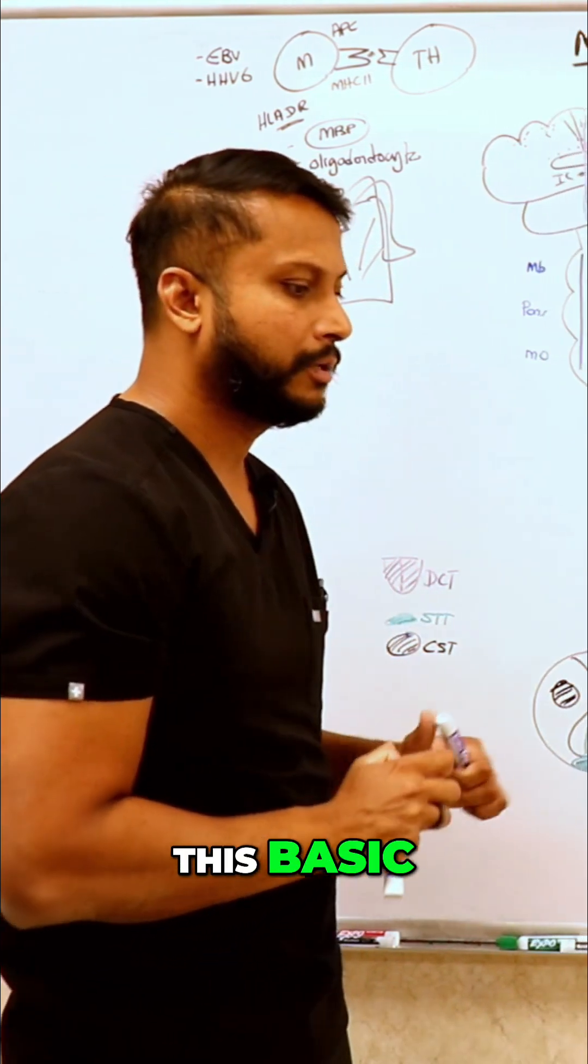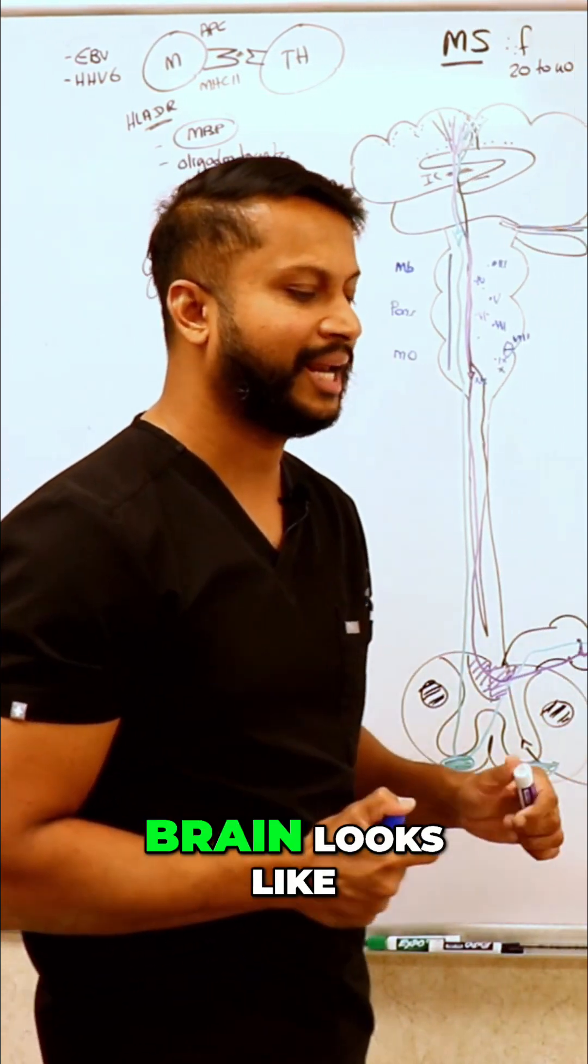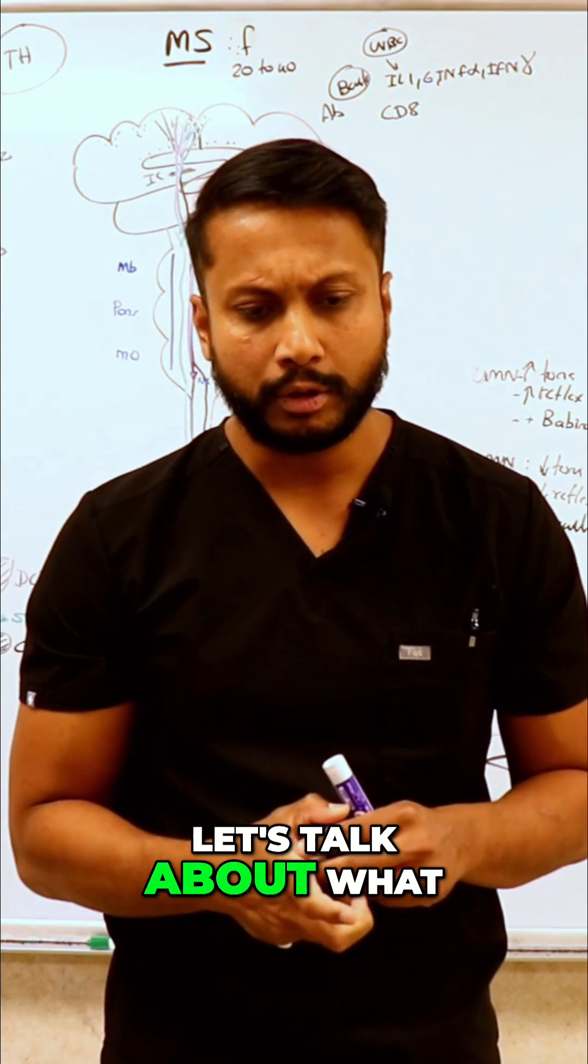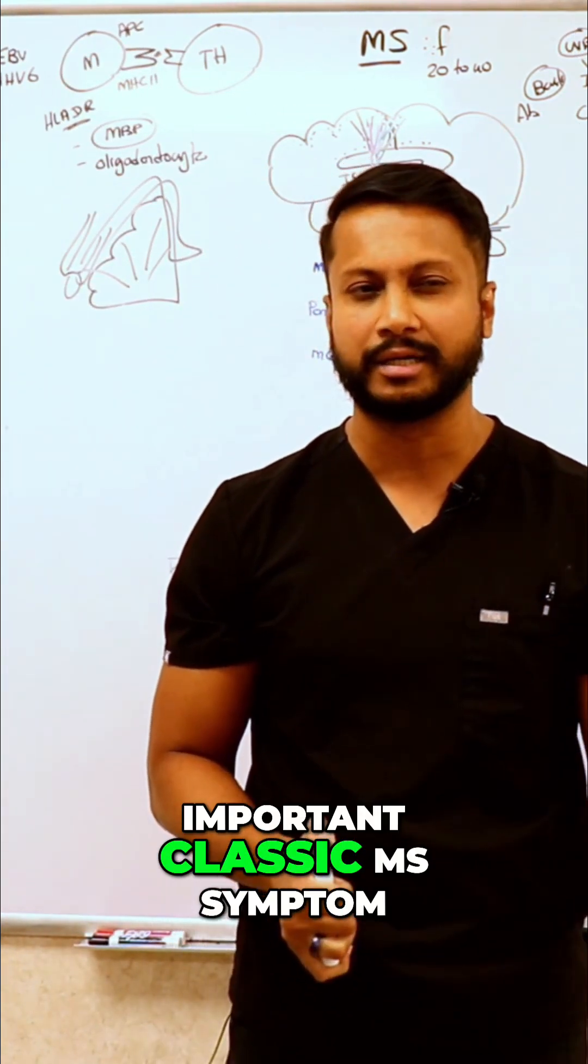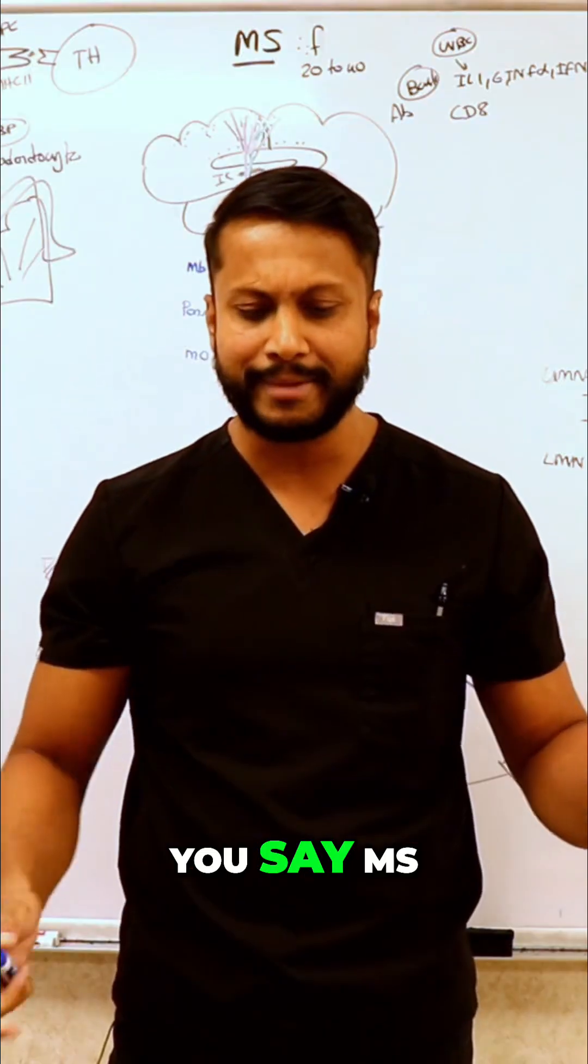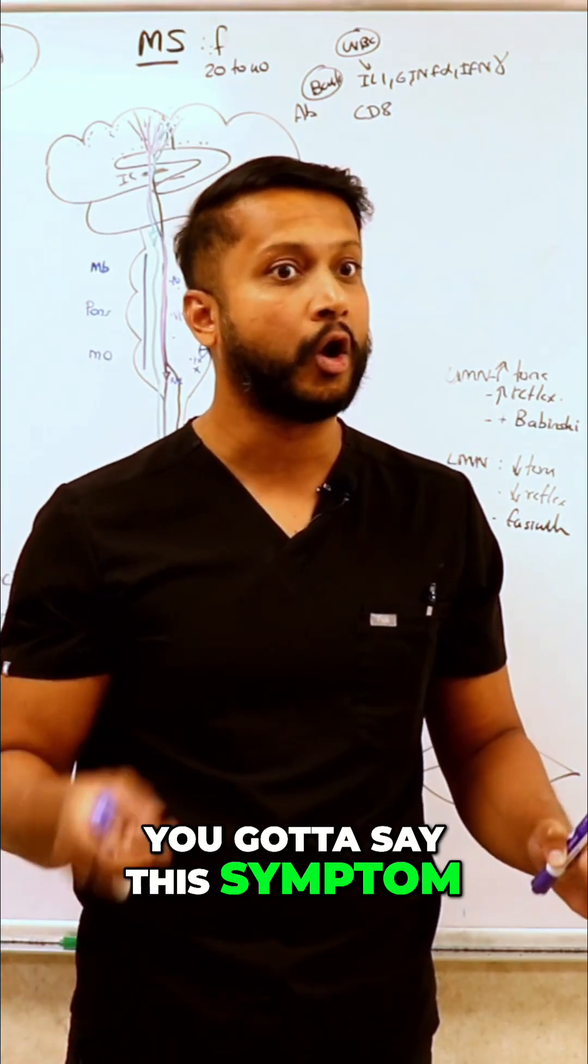Now that we've understood the basic idea of what the brain looks like, let's talk about what problems happen with MS. What is your most important classic MS symptom? The moment you say MS, you've got to say optic neuritis.